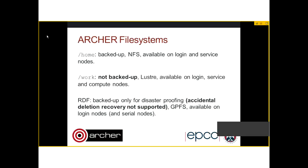Just a brief reminder about the file systems on Archer. We've got /home, which is the default file system you see when you first log in. It's where you keep important files like source code, as it's fully backed up and recoverable. It's a network file system available on both the login and service nodes — and by service nodes I mean things like the MOM job launcher nodes — importantly, not the compute nodes.